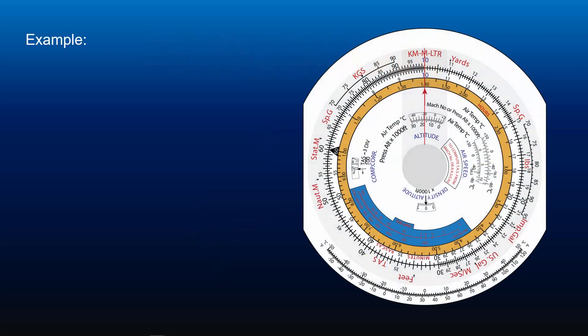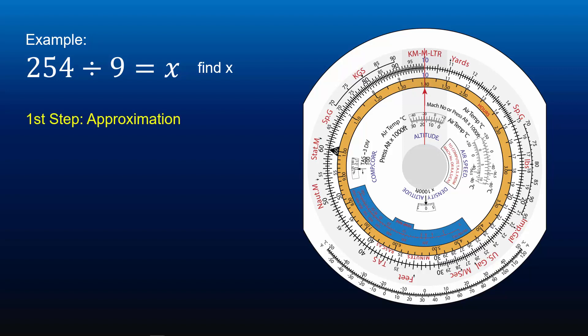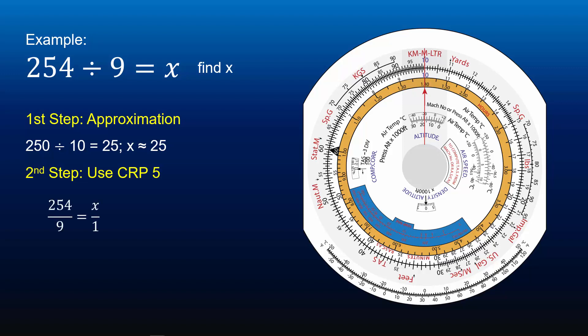To further understand division, let's look at an example: 254 divided by 9 equals X — find X. The first step is to approximate the answer: 250 divided by 10 equals 25, thus X is approximately 25. The second step is to plug in the variables into CRP5 to find the answer. We rewrite the problem as 254 over 9 equals X over 1. The arrangement of the variables should look like this.